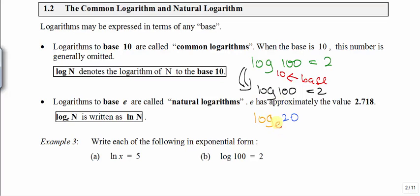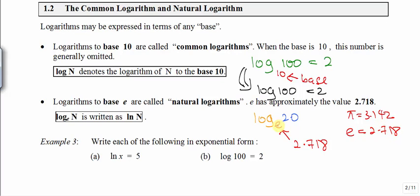Another commonly used log is log base e. E takes the value of 2.718 — it's a constant, just like pi is 3.142. Log base e is another commonly used logarithm, and it is known as natural logarithms. It has a value of 2.718.